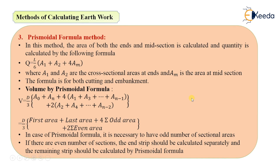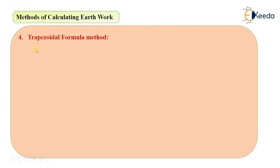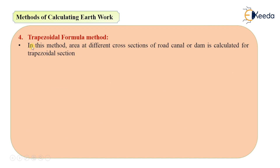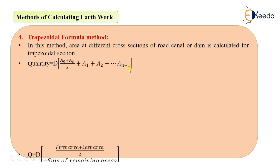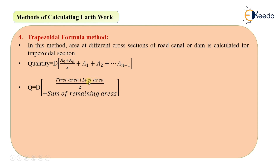The last method is the trapezoidal formula method. In this method the area at different cross-sections of a road, canal, or dam is calculated for a trapezoidal section, and the quantity is calculated by the formula: V = d × [(A0 + An)/2 + A1 + A2 + ... (remaining areas)]. That is, depth multiplied by the mean of the first and last areas plus the sum of all remaining areas. This was the video on methods of calculating earthwork quantities. Thank you.